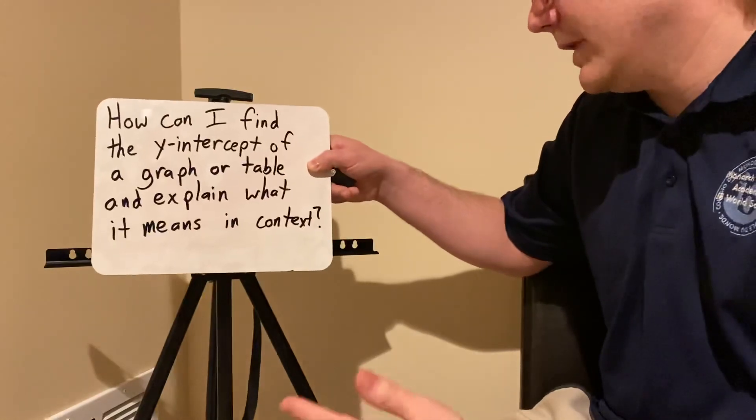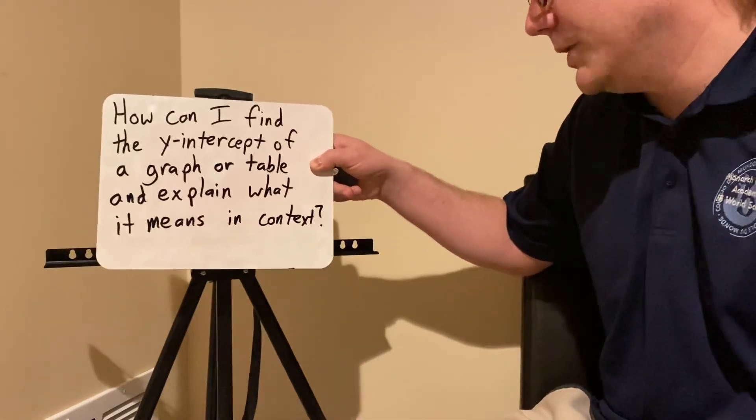So how can I find the y-intercept of a graph or a table and explain what it means in context?